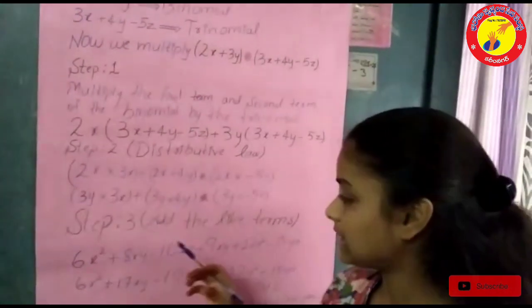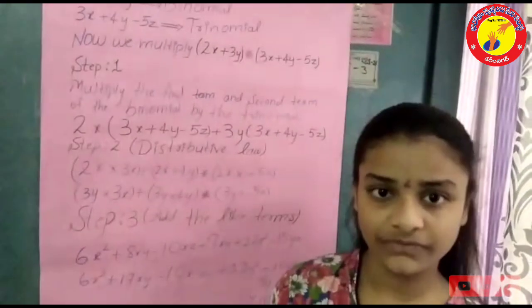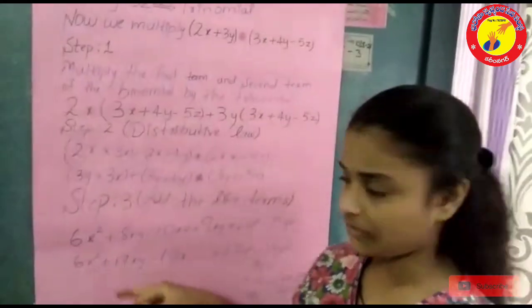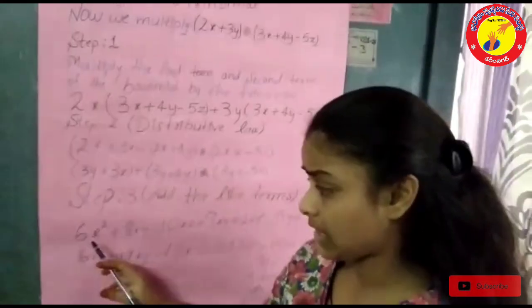Step 3: In step 3 add the like terms. First we have to multiply these distributive law terms and we have to add the like terms.